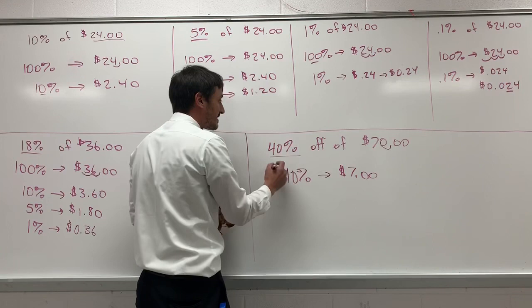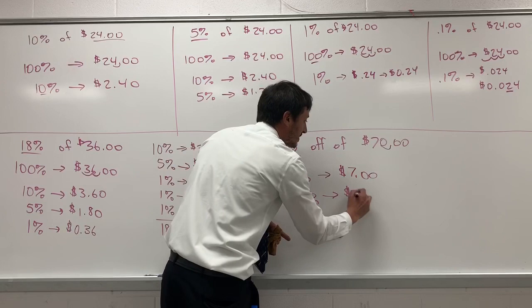So, 40% is going to be four of these. So, 40% is four $7, which is $28. Remember that this is the amount of money that you're saving.